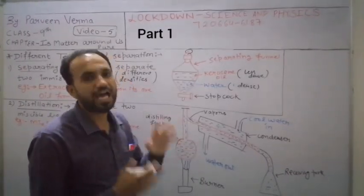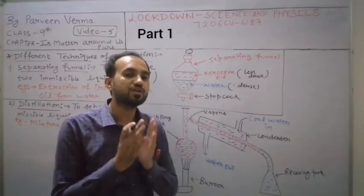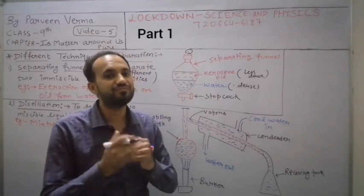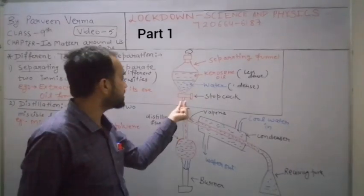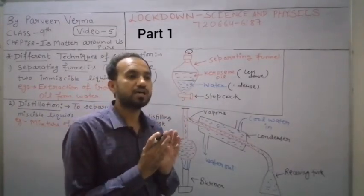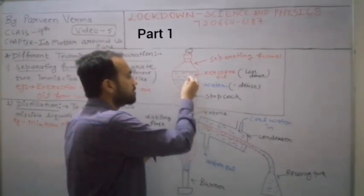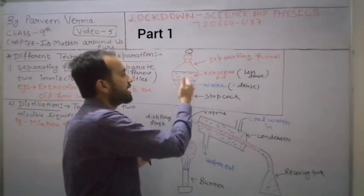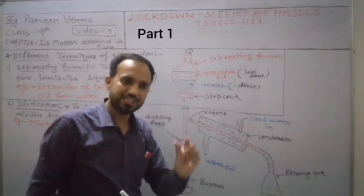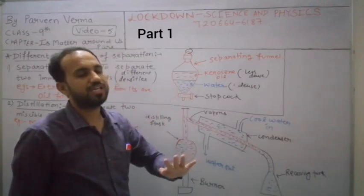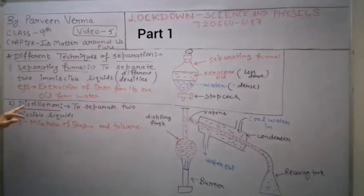The separating funnel works on the principle that different liquids have different densities. I hope you understand why the opening is narrow and not very broad - if it were broad, when we open it the water would flow out too quickly and kerosene oil might also come out with it. That's why it's kept narrow, so water flows slowly and only water comes out while kerosene oil remains inside.